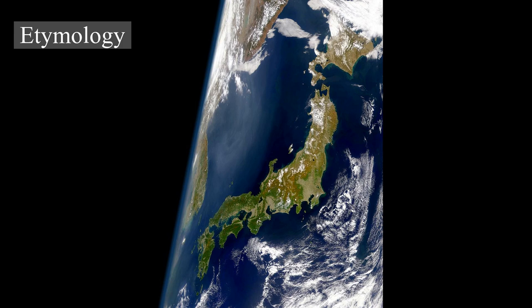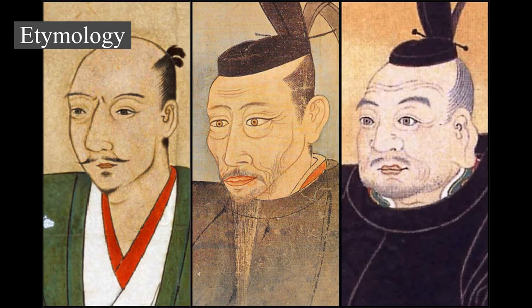In the 13th century, Marco Polo recorded the early Mandarin or Wu Chinese pronunciation of the characters as 'Cipangu.' The old Malay name for Japan, Japang or Japan, was borrowed from a southern coastal Chinese dialect and encountered by Portuguese traders in Southeast Asia, who brought the word to Europe in the early 16th century. The first version of the name in English appears in a book published in 1570, which spelled the name as 'Giapan' in a translation of a 1565 Portuguese letter.